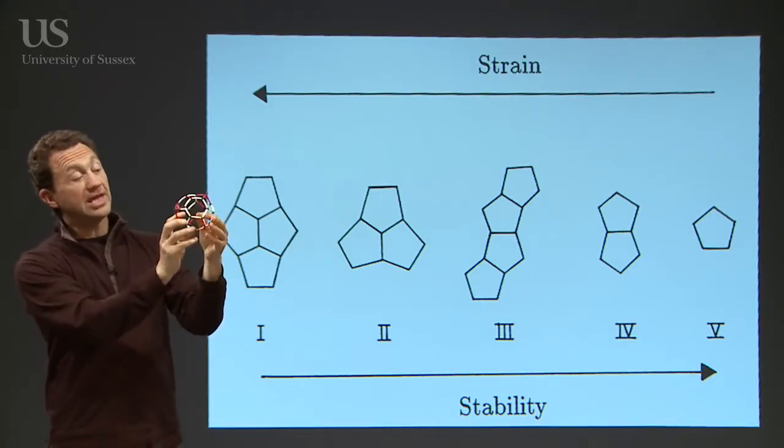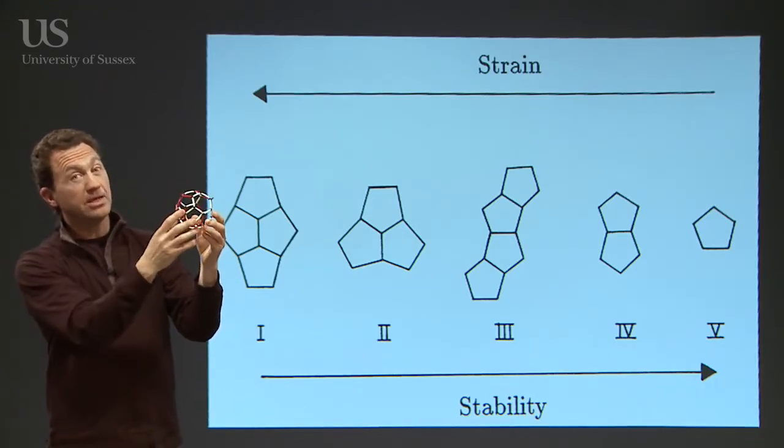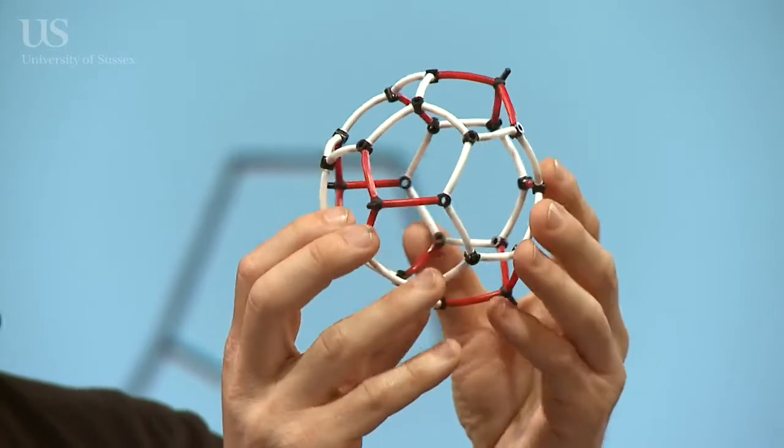When you get down to C28, because there's pentagons side by side in threes on this structure, this shouldn't be stable on its own. In fact, that may be the reason why no one has actually seen it in a test tube.